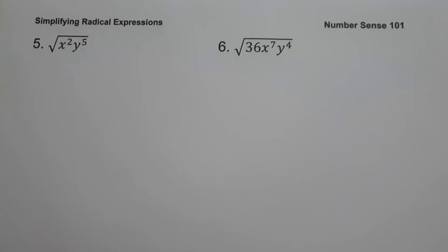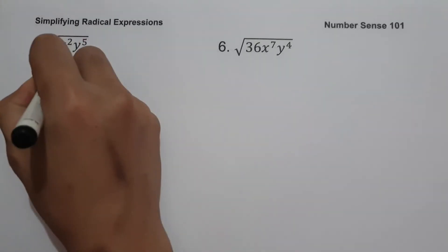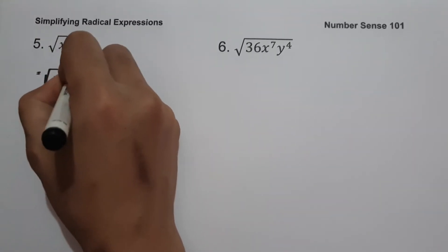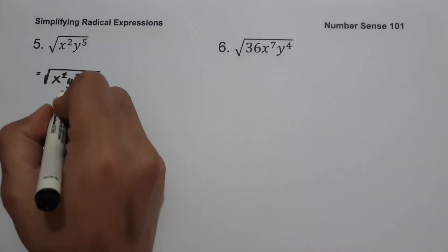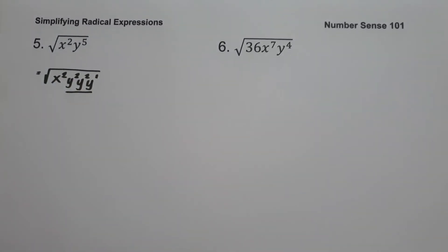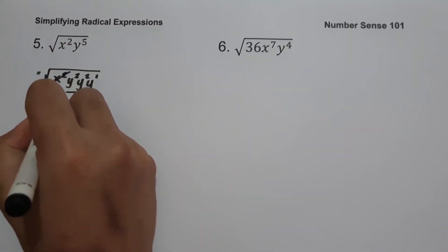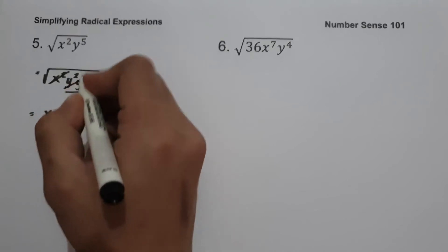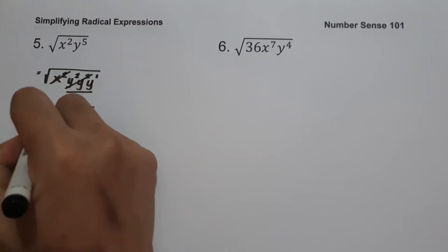On example number 5, we have square root of x squared y raised to 5. To simplify the given expression we are going to divide the exponents of x and y by 2, because our index is 2. Let us rewrite this as square root of x squared, y squared, y squared, and y raised to 1. The square root of x squared is x, and since we have 2 y-squared terms we get y squared, then square root of y. This will be our answer.